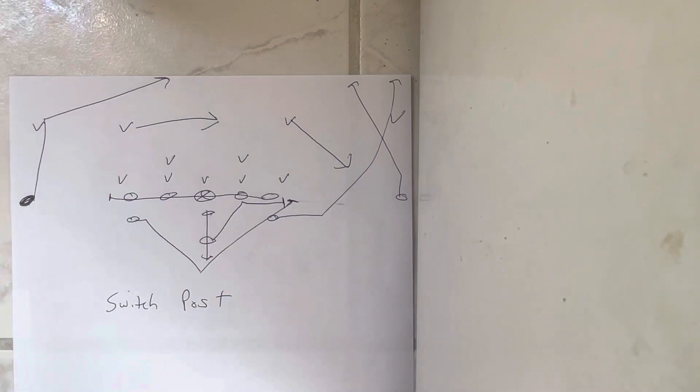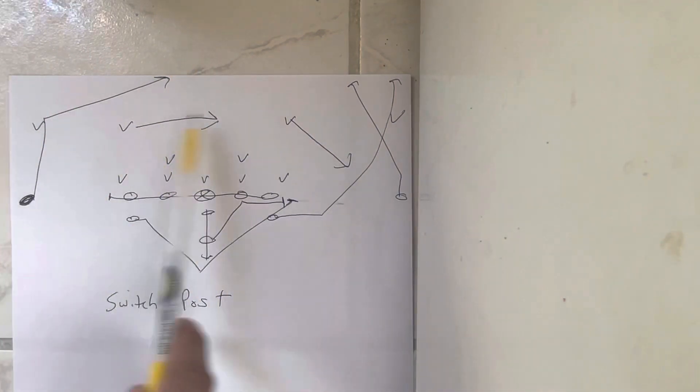Now this guy's the key because he runs 10 yards down the field and breaks at a 45, because as soon as this guy moves and this guy moves, you're going to throw where he's not. So he's going to go 10 yards down the field, break at a 45-degree angle.